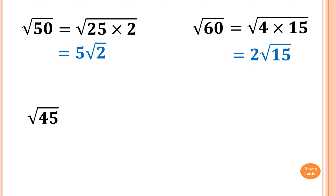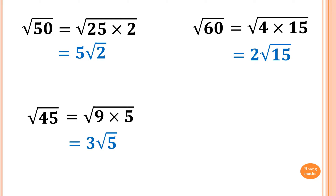Now √45. You know that 45 is 9 times 5, because 9 is a square number. So which is equal to √(9 × 5), and square root 9 is 3, so the answer is 3√5. That's how you simplify.